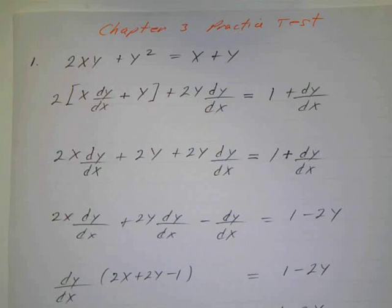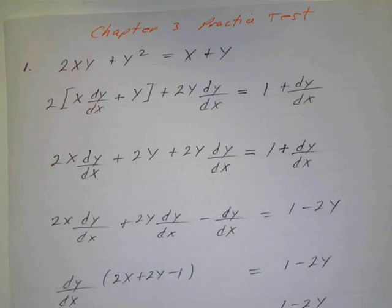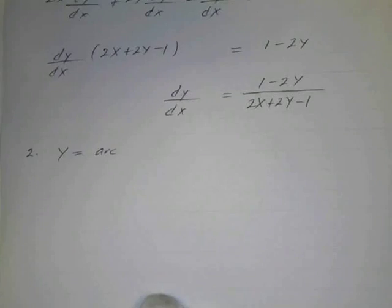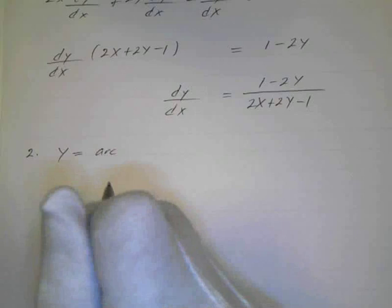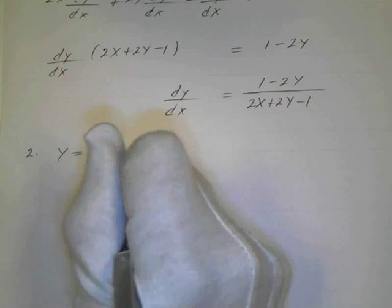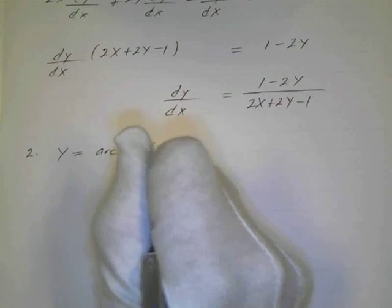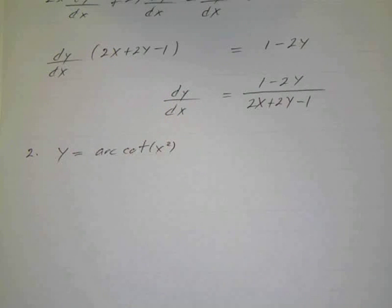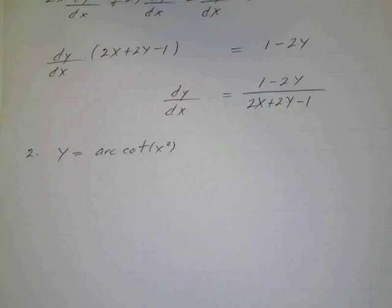The next one, number 2, we want to find dy/dx. y equals the arc cotangent of x squared. Remember the derivative of arc cotangent — you look on your class cards, those are the formulas you remember. The formulas aren't in terms of the chain rule, so you have to apply it separately.